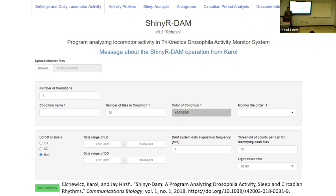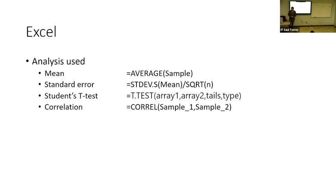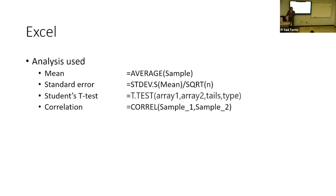We didn't use this software to make our graphs since it was really finicky in that aspect. As for Excel, these are some of the functions we used: mean, standard error, Student's t-tests, and correlation analysis. We did a two-tailed, one-type t-test since we were comparing homogenous data similar to each other, and we used standard error of mean to see the variance in our averages of each replicate. The correlation analysis was done on both the DAM assay results and fly bar apparatus results.